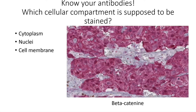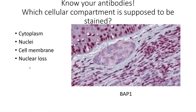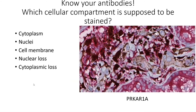The cell membrane, the nuclei, and the cytoplasm can all three be involved in this beta-catenin stain. Sometimes you will be looking for a nuclear loss — for example, for BAP1 here in this nest. All the nuclei have lost BAP1 expression, with controls of course here in the epidermis. Another expression pattern is cytoplasmic loss: you're going to look for PRKAR1-alpha loss, which is quite specific of pigmented epithelioid melanocytomas.